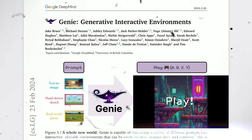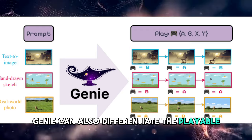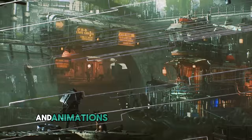enemies, obstacles, power-ups, and goals. GENI can also differentiate the playable elements from the static backgrounds and interfaces, and it can generate realistic physics and animations for the characters and objects.